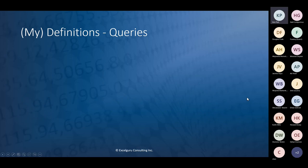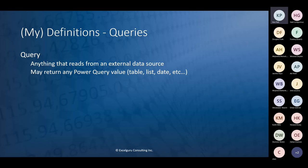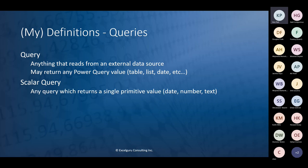Let's talk about some definitions. When we talk about queries versus parameters, it's helpful to understand what is what. For me, a query is anything that reads from an external data source — connecting to an external data source makes it a query. This could return a Power Query value, a table, a list, a date, or anything. The big thing is: if it connects to an external data source, it is a query.